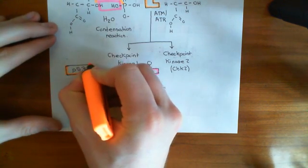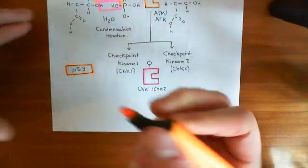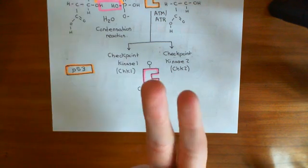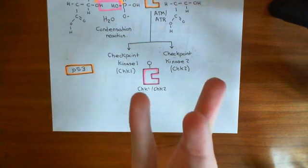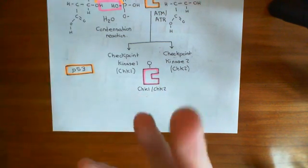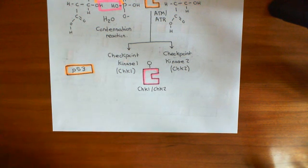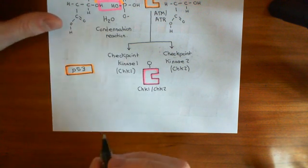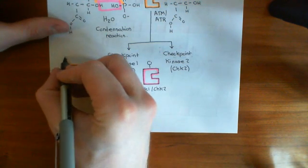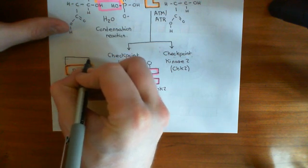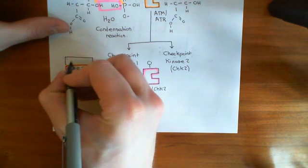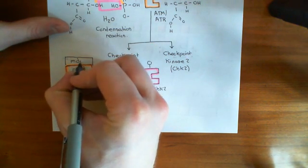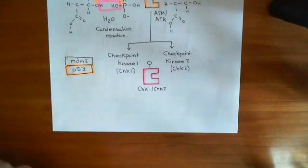Because P53 has quite dramatic actions. It turns on DNA repair, it halts cell division, and it causes apoptosis if things get bad enough. So we don't want it always activated. So the way in which we inactivate it is we also create a protein known as MDM2. And what MDM2 does is it binds to P53, like I've just shown.